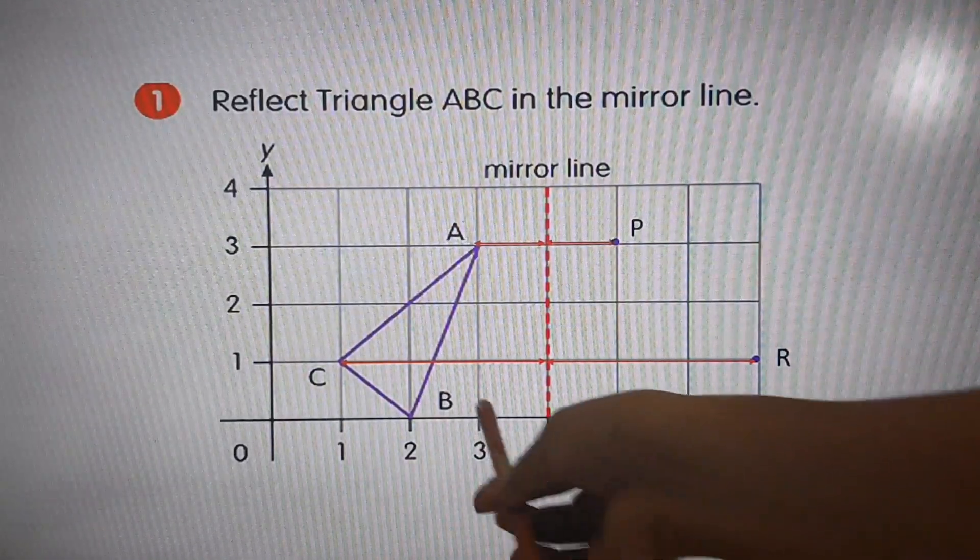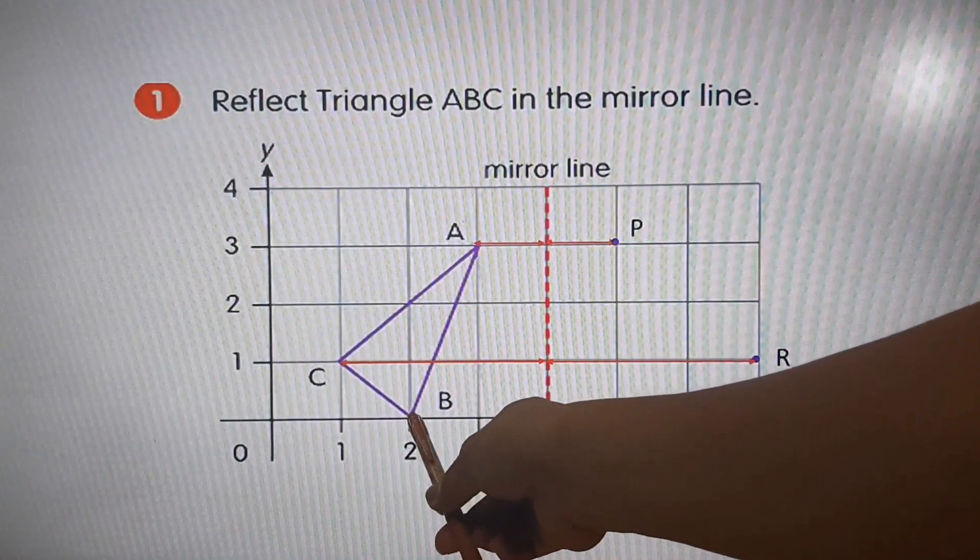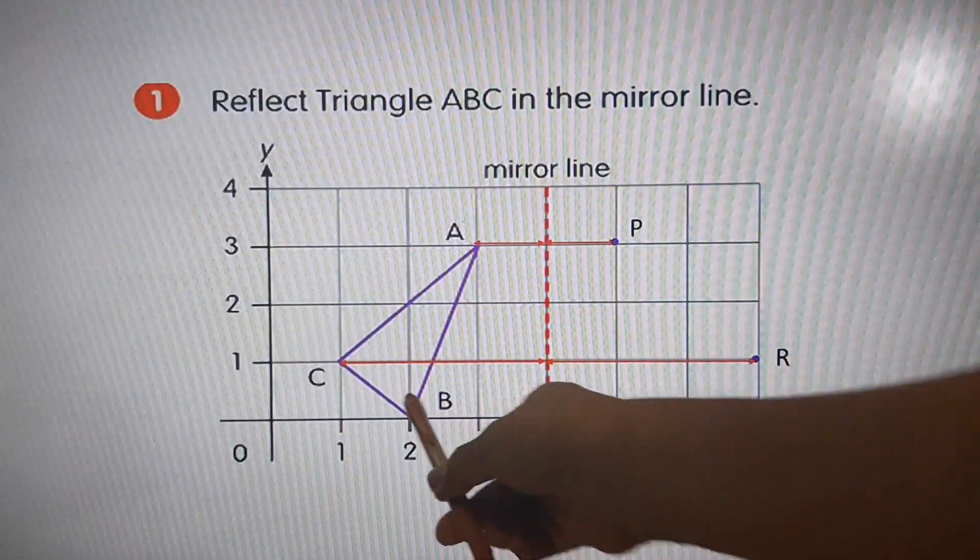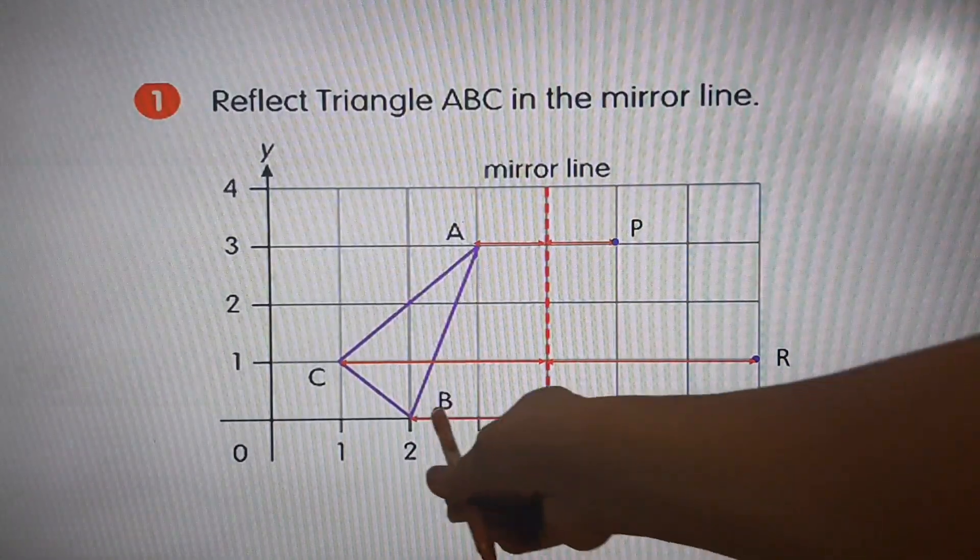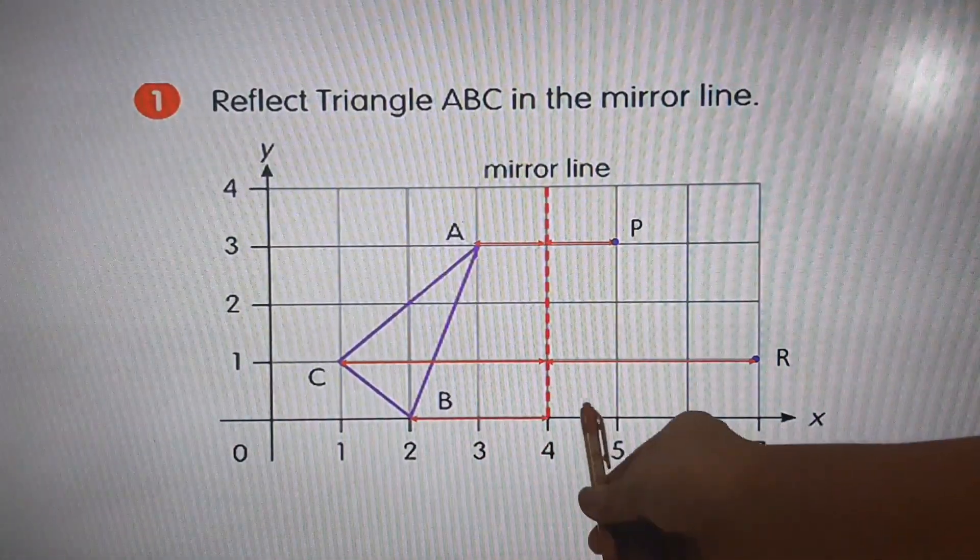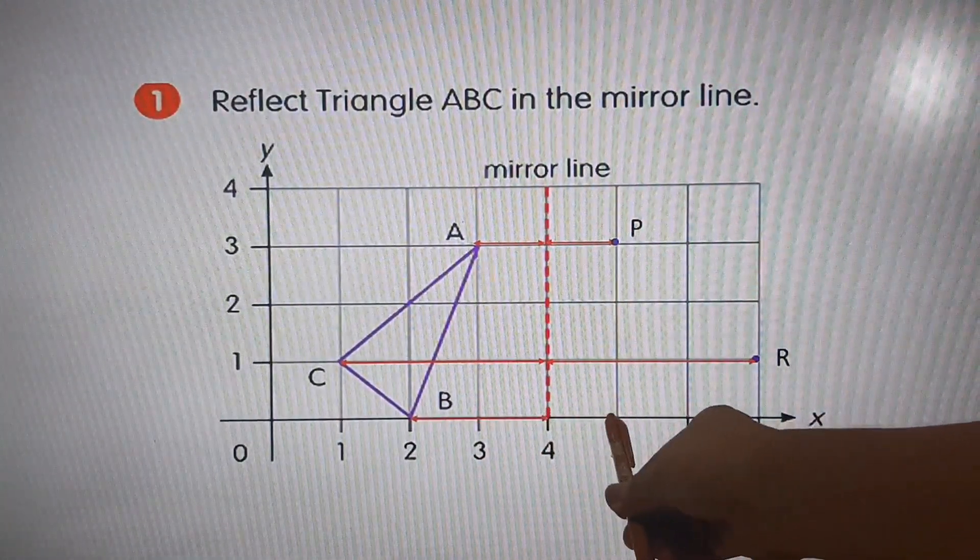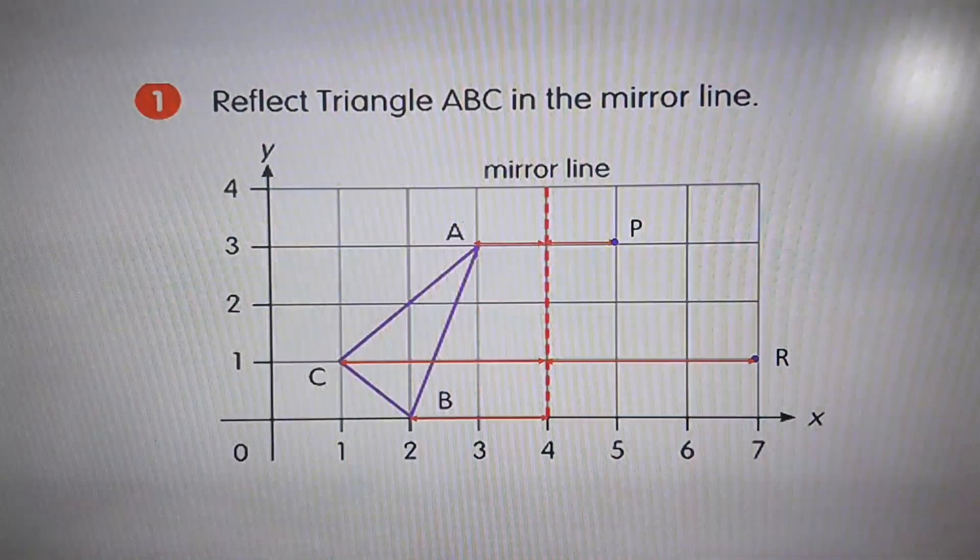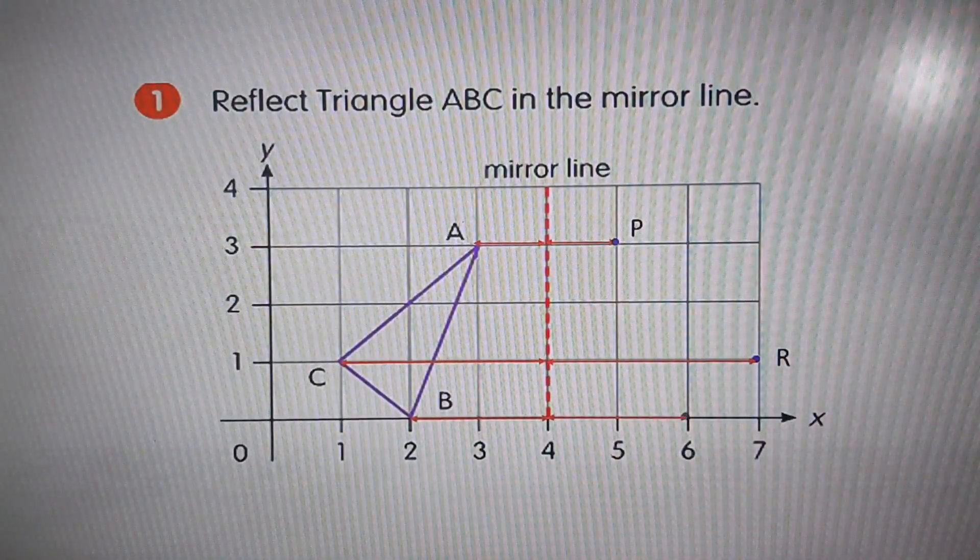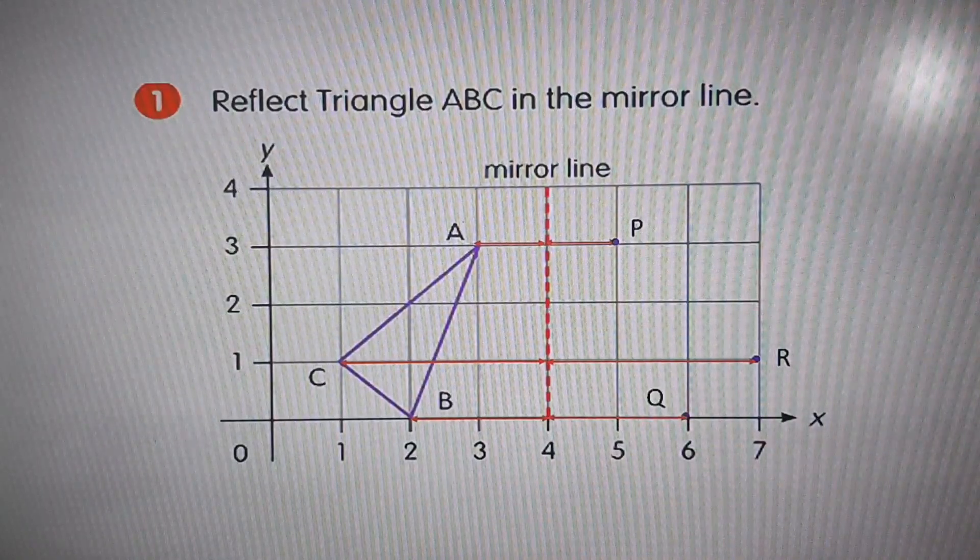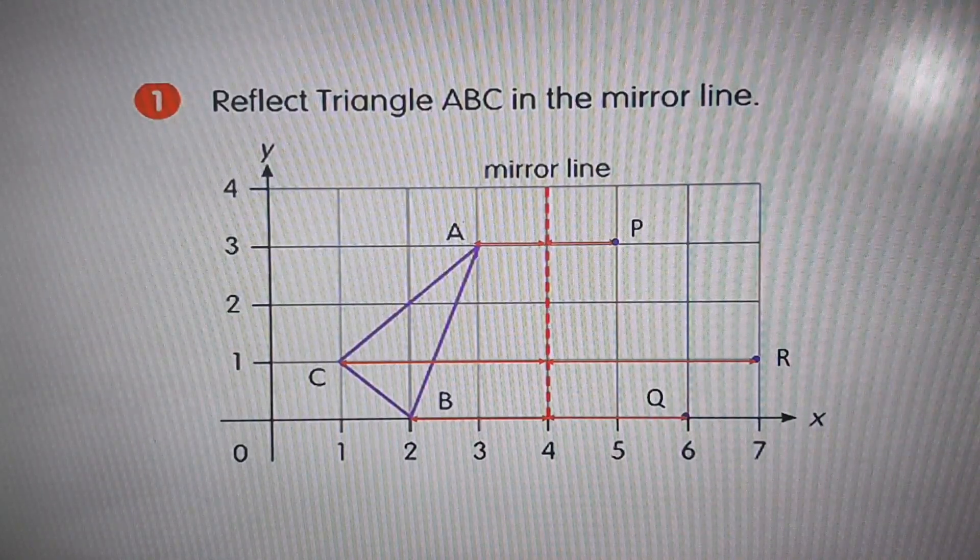Same step in counting from point B to the mirror line. There are two, one, two, one, two, so it means we need to count one and two. Expected, the point will be there. And we name this point Q.